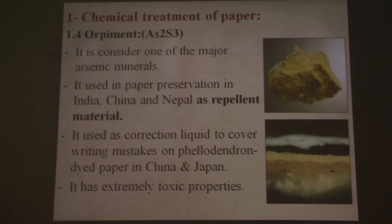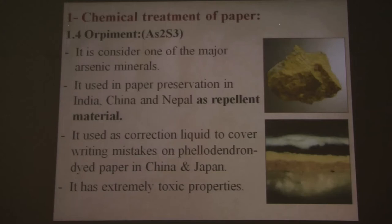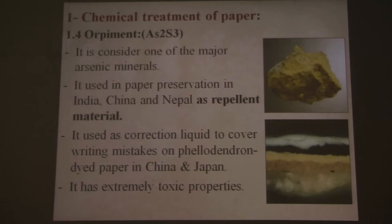The fourth material regarding chemical treatment of paper is orpiment, which is an arsenic material used extensively in paper preservation in India, China, and Nepal. It had also been used to correct writing mistakes — if you dye a paper with philodendron dye it is yellow, so you need a yellow color to correct writing mistakes, which was done with an aqueous solution of orpiment. This material has extremely toxic properties.